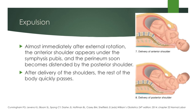Finally, we have expulsion, which is the last cardinal movement of labor. Almost immediately after external rotation, the anterior shoulder appears under the symphysis pubis, and the perineum soon becomes distended by the posterior shoulder. After delivery of the shoulders, the rest of the body quickly passes.